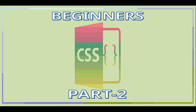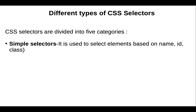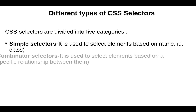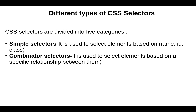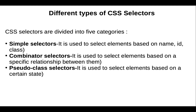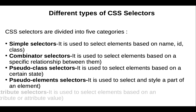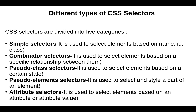Hello guys, welcome to my YouTube channel UI Ninja. In this video I am going to discuss about different types of CSS selectors. CSS selectors are divided into 5 categories: simple selector, combinator selector, pseudo class selector, pseudo element selector, and attribute selector. All these selectors are used in CSS.